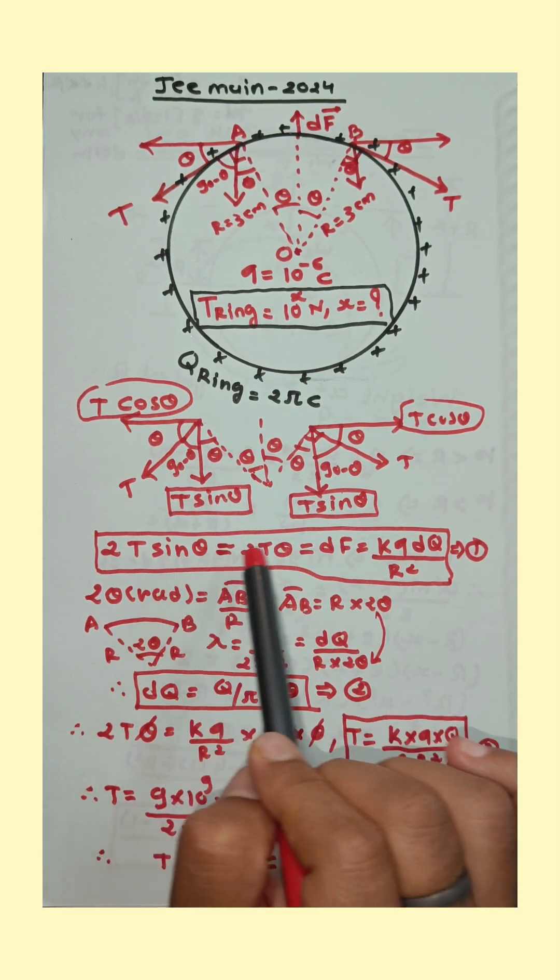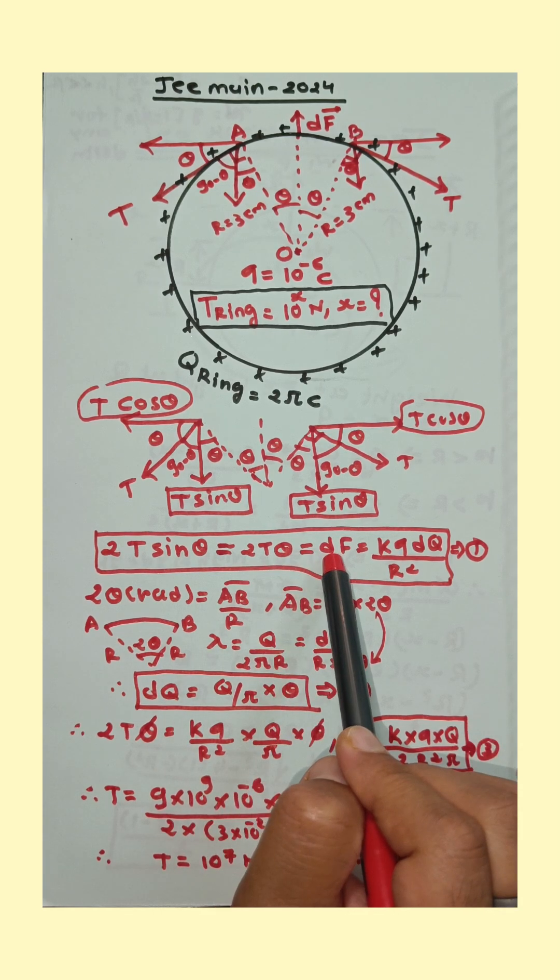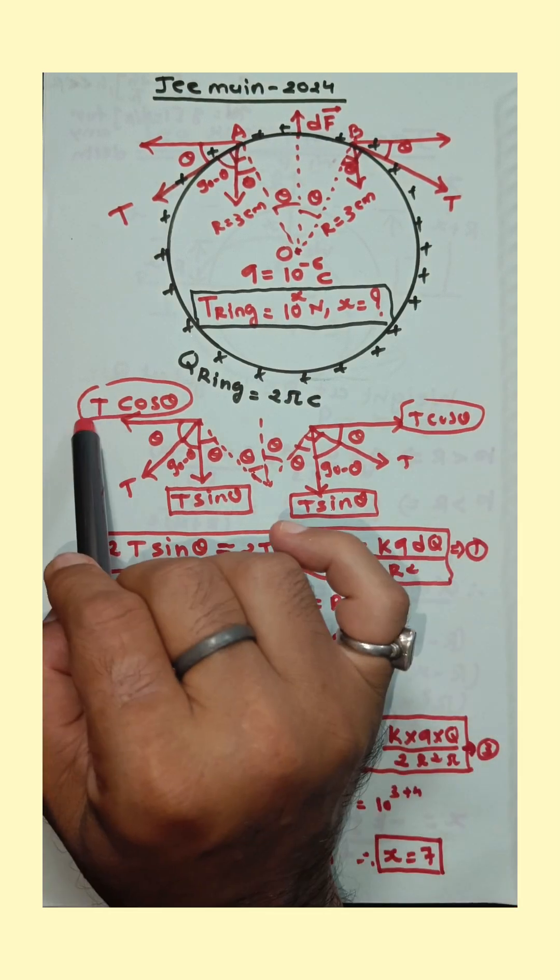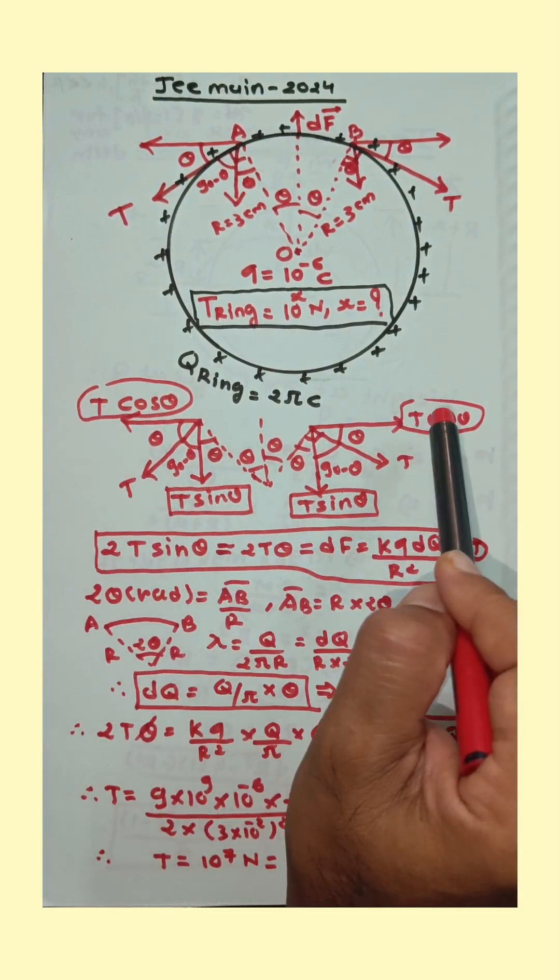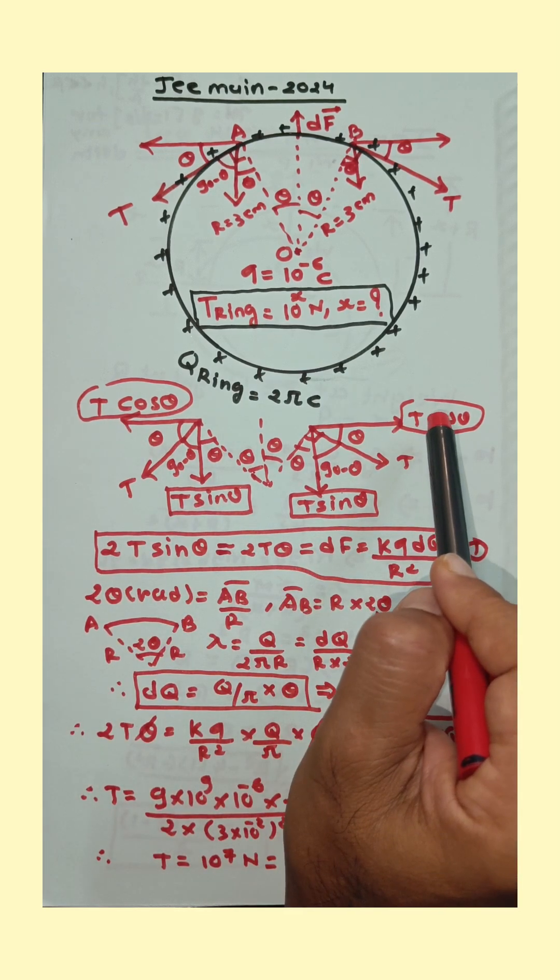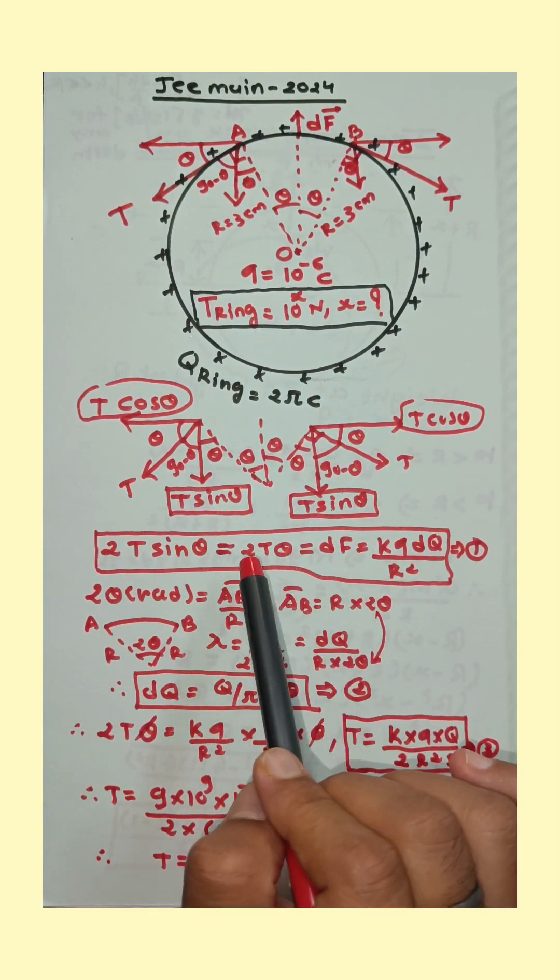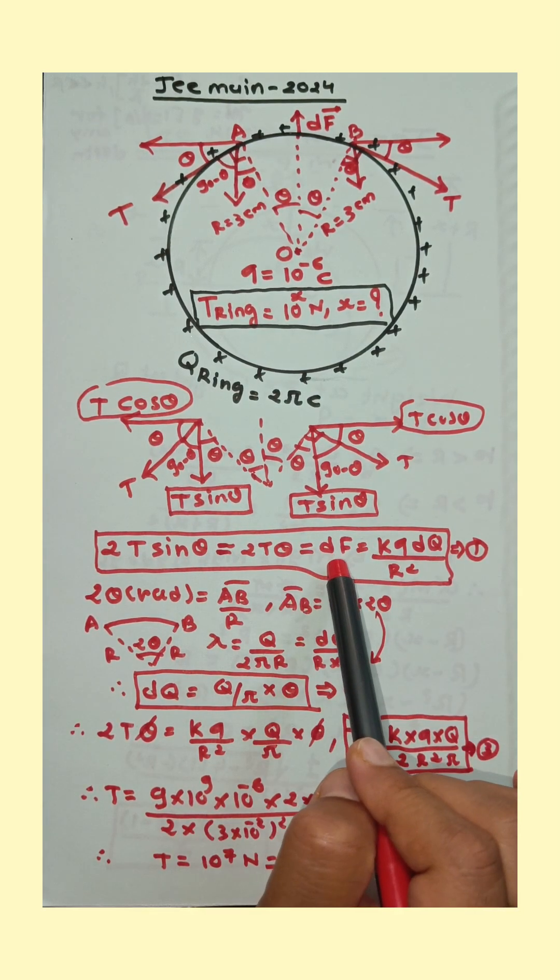If theta is small then sin theta approaches theta. So 2T theta is equal to df. Here T cos theta are in opposite direction. So cancel the effect of each other. So downward force is equal to upward force. So 2T theta is equal to df.